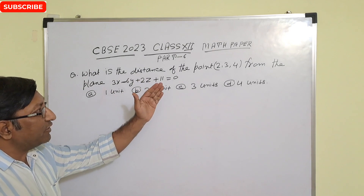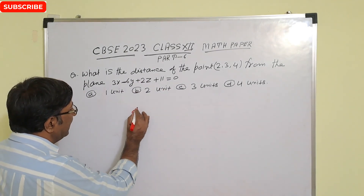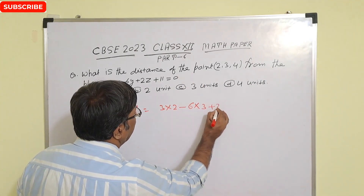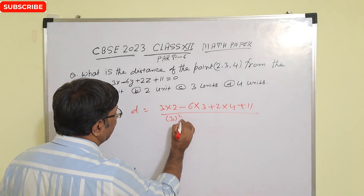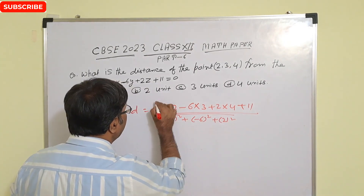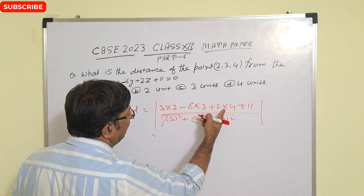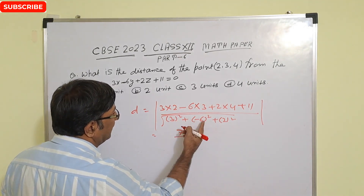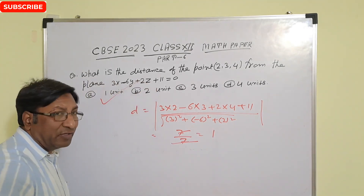What is the distance of the point (0, 2, 3, 4) from the given plane? Using the distance formula: d equals the absolute value of (3×2 minus 6×3 plus 2×4 plus 11) divided by the square root of (3² + (-6)² + 2²). The numerator gives 6 minus 18 plus 8 plus 11 equals 7. The denominator gives root of (9 + 36 + 4) equals root 49 equals 7. So d equals 7/7 equals 1 unit.